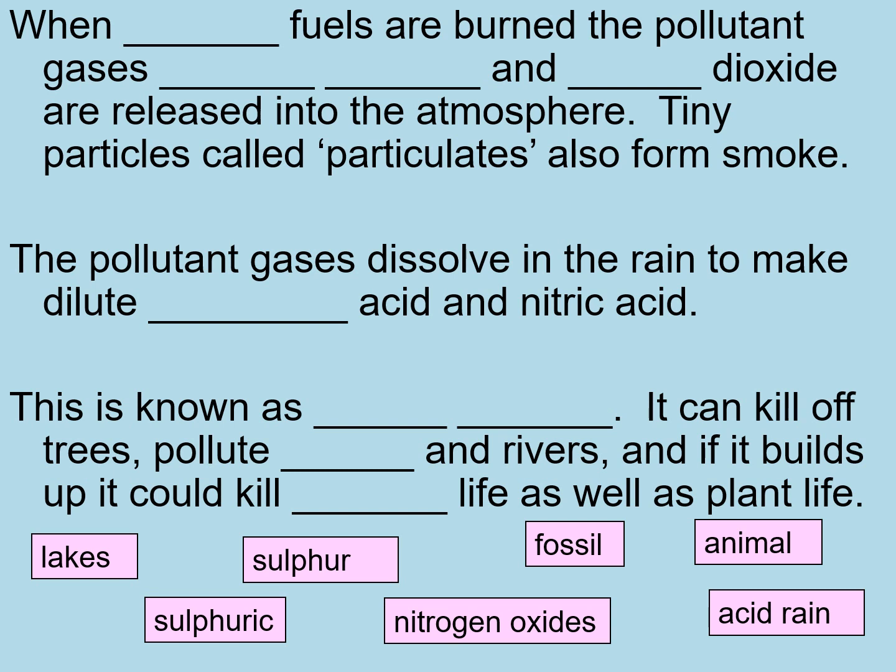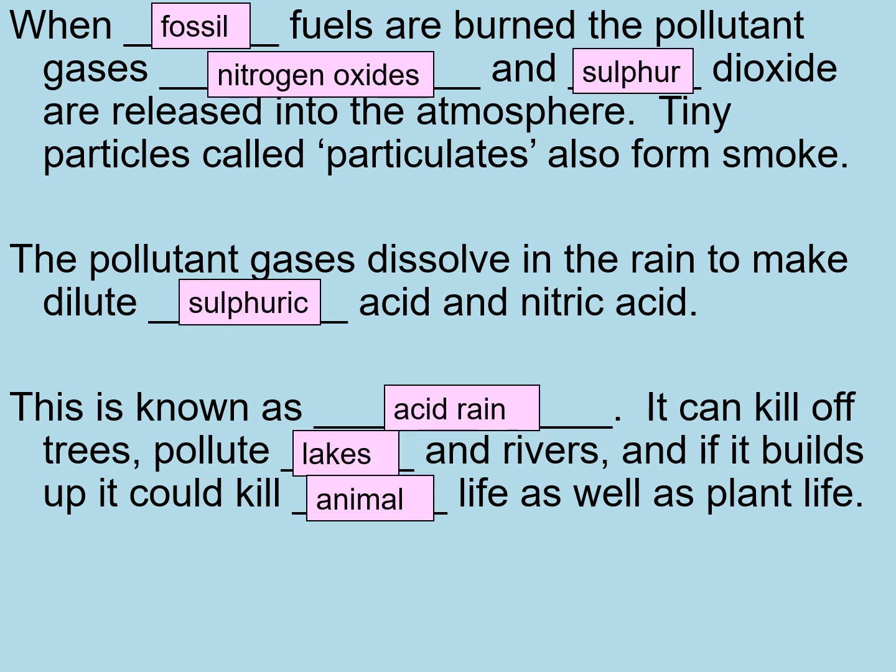Complete the gap fill exercise using your keynotes — pause the video and press play when ready for the answers. When fossil fuels are burned, the pollutant gases nitrogen oxides and sulfur dioxide are released into the atmosphere. Tiny particles called particulates also form smoke. The pollutant gases dissolve in rain to make dilute sulfuric acid and nitric acid — this is known as acid rain. It can kill off trees, pollute lakes and rivers, and if it builds up it can kill animal and plant life, impacting biodiversity.